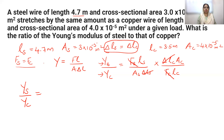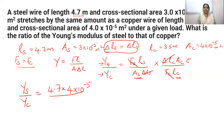We substitute L_S into A_C — area of cross-section of copper — which is 4 into 10 raised to minus 5, divided by A_S into L_C. Substituting A_S value: 3 into 10 raised to minus 5 into L_C, length of copper given as 3.5. The 10 raised to minus 5 terms cancel.